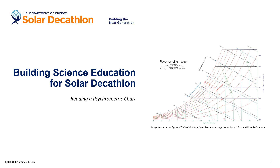Welcome to the Solar Decathlon Building Science Education Series. I'm Paul Torsolini, and in this episode we'll be continuing our discussion of occupant comfort and the properties of moist air. This episode will walk through the basics of how to read a psychrometric chart, which is a key design tool for architects, engineers, and builders to help deliver comfortable buildings for their occupants.